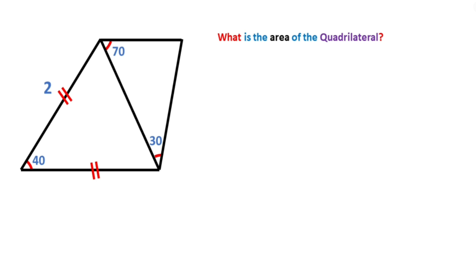First, if you draw a perpendicular like this, the base will be divided into two equal parts — because of this isosceles triangle — and then these two angles must be equal: 20 degrees.